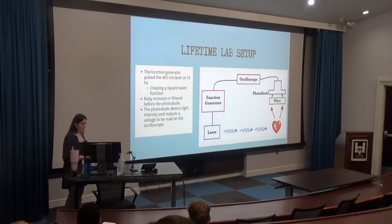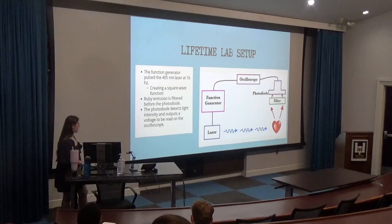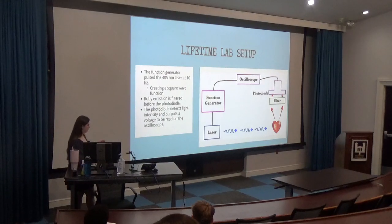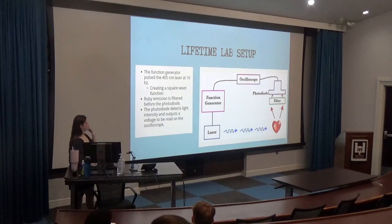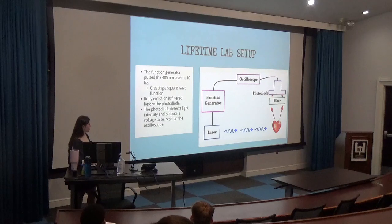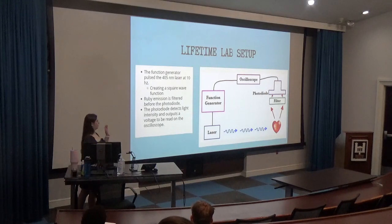Moving into our second experiment, here's a simple schematic of what exactly we were doing. We used something called a function generator that turns the laser on and off very fast at whatever frequency we chose — which was 10 hertz, for example. We had to have the laser turn on and off to actually be able to observe the decay; otherwise the atom was just constantly in the excited state. We used a blue laser this time, which was 405 nanometers, and it excited the ruby. The light passed through a filter into a photodiode, which turned the intensity it detected into a voltage that we could read on the oscilloscope.